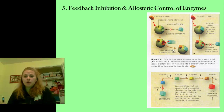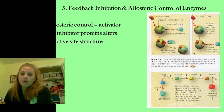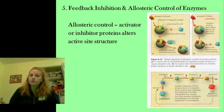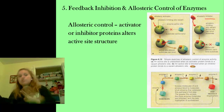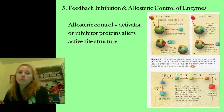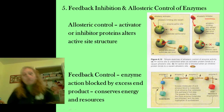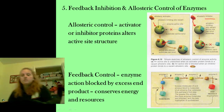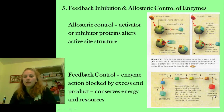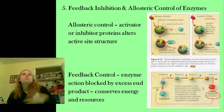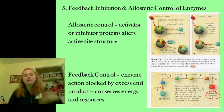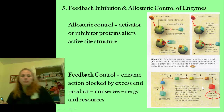Regarding allosteric control: activator or inhibitor proteins will alter the active site structure. If it's an activator, it's going to make it so the substrate can fit. If it's an inhibitor, it's going to prevent the substrate from binding. Now, feedback control — this is what we talk about when an actual end product acts on a particular enzyme to prevent overproduction of the end product.